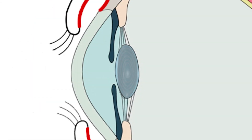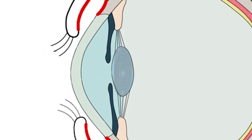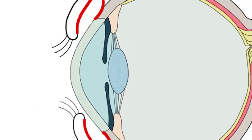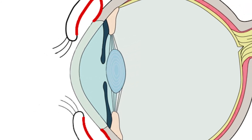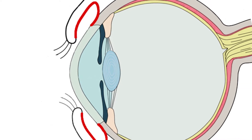Lens: the transparent biconvex body suspended by the zonules behind the pupil and iris, part of the refracting mechanism of the eye.